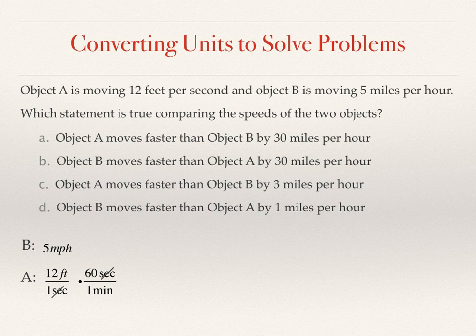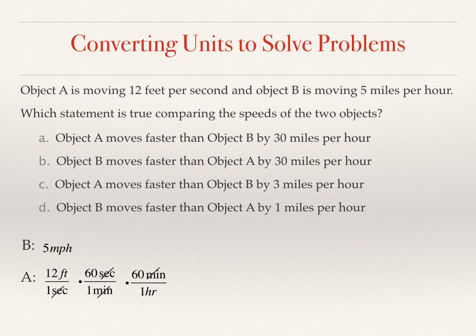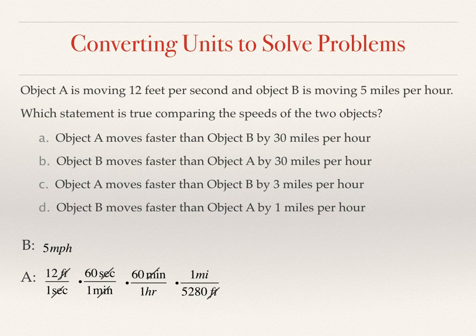Another conversion factor: there are 60 minutes in one hour, and the minutes will cancel out, leaving hours in the denominator — which is what I want for miles per hour. But I currently have feet per hour, not miles per hour. So I multiply by a fraction with feet on the bottom and miles on the top, using the fact that there are 5,280 feet in one mile, so the feet cancel out, giving me miles per hour.